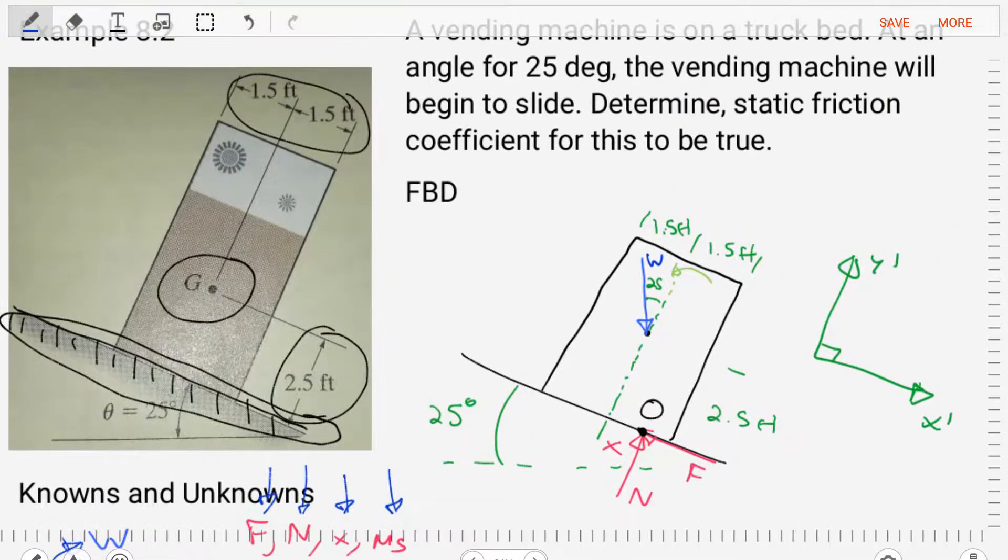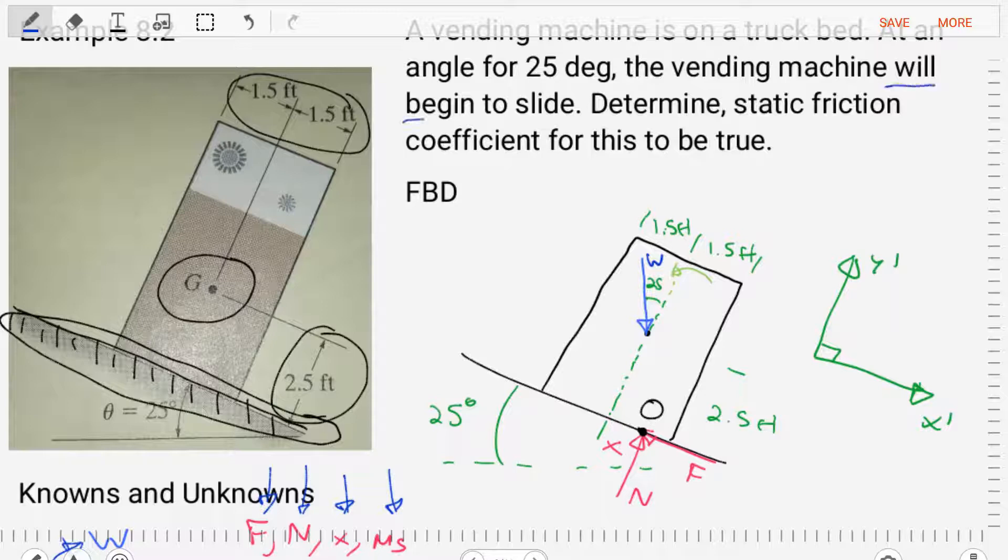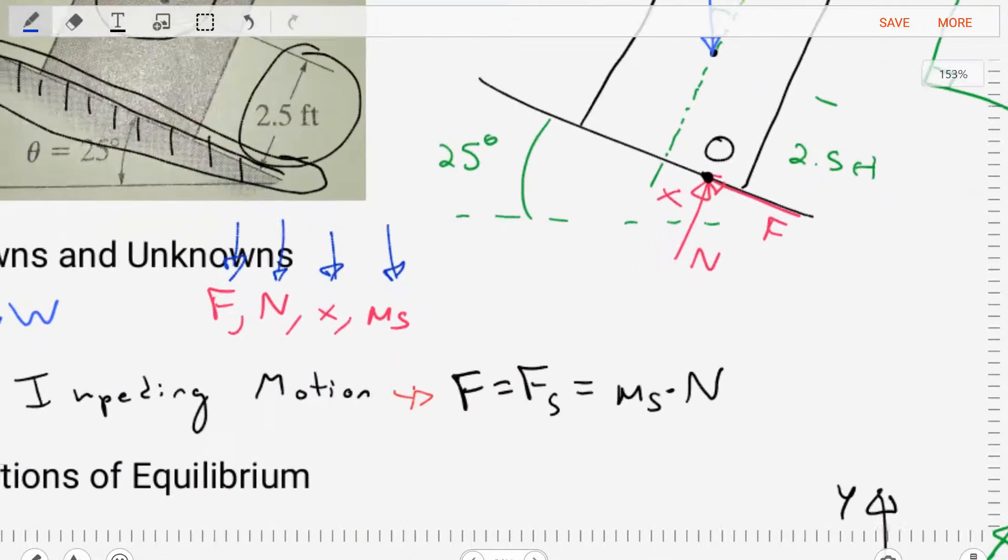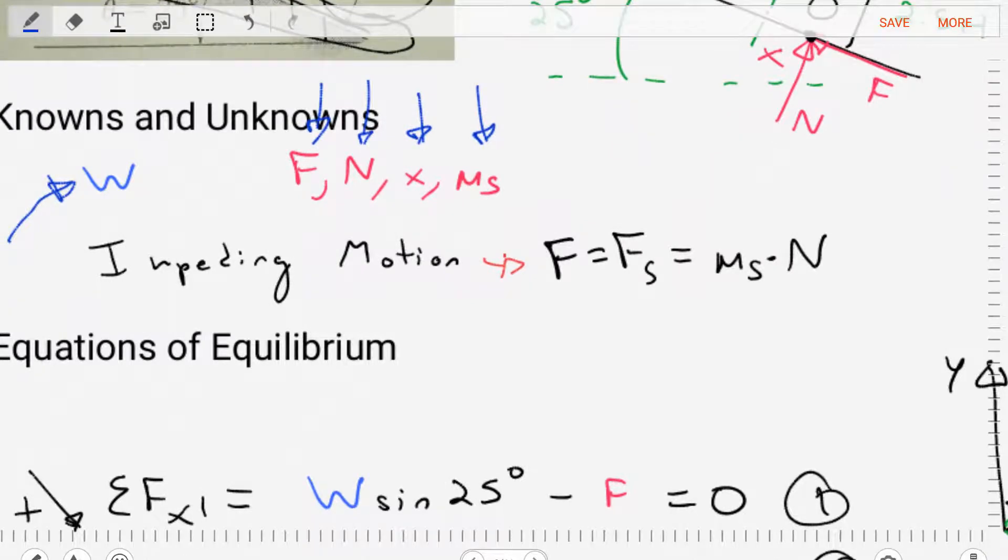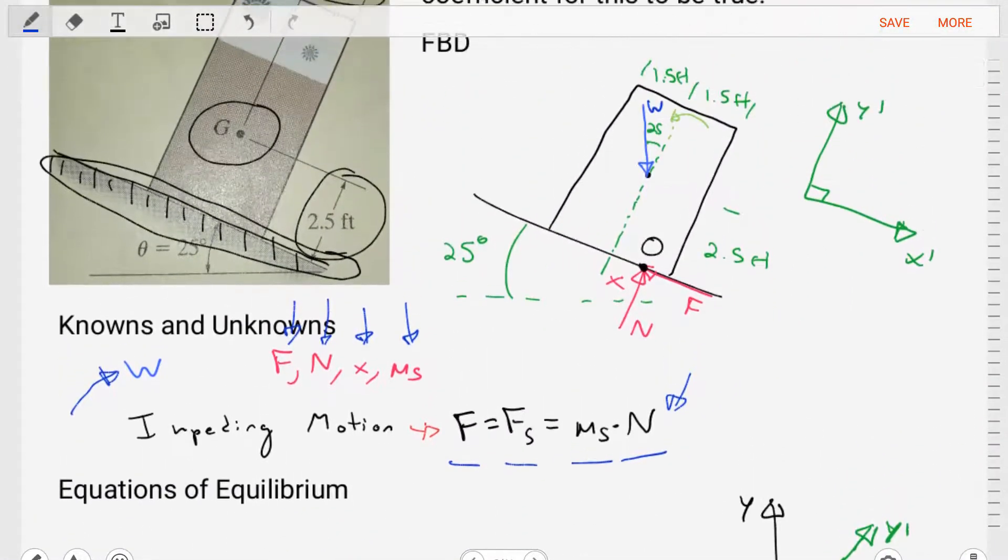Because in this problem, we're told the vending machine will begin to slide. This is that instance where it is just about to slide. That instance is called impending motion. And it gives us an equation where the force that's exerted on the body is equal to the static frictional force calculated as the static friction coefficient times the normal force. So this is like an extra equation of equilibrium that we can use. So now that we know that, let's craft equations of equilibrium for this free body diagram.